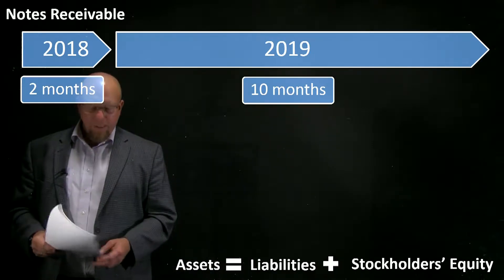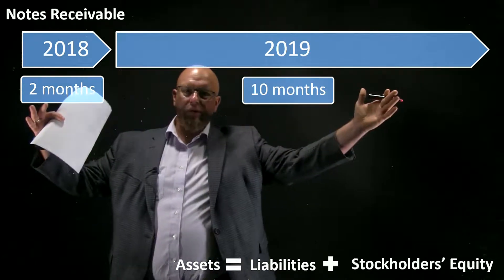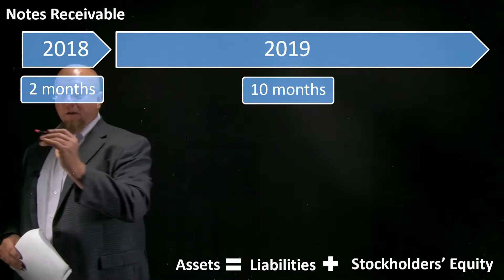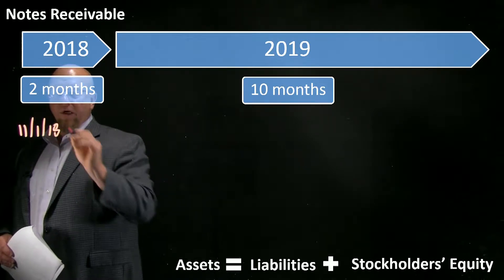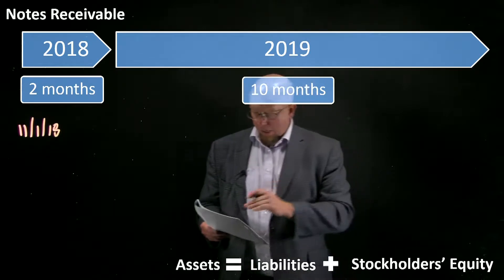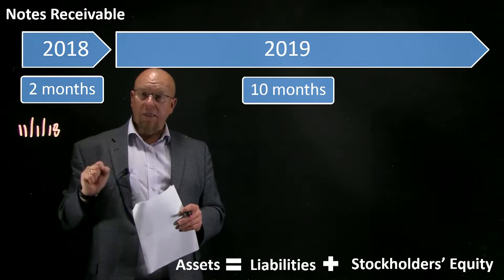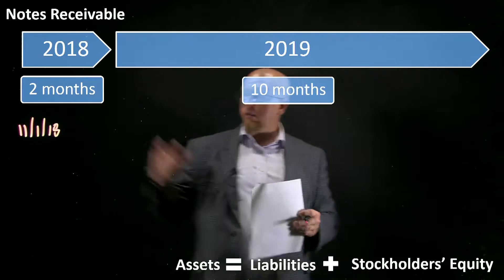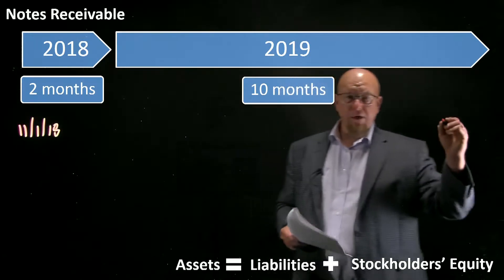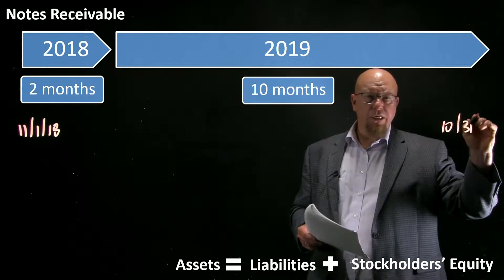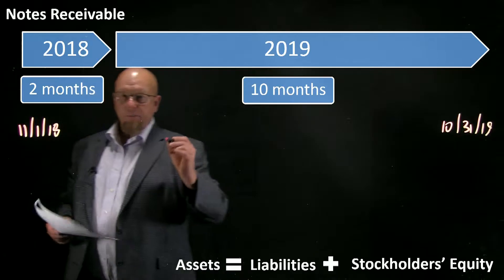We get some nuances when a note spans two different reporting periods. November 1 is the inception of the note — we're going to lend money to somebody on November 1. This is a 12-month note: two of those months will occur in 2018, and ten of them in 2019 — November and December, then January through October. The maturity date is Halloween of the following year.